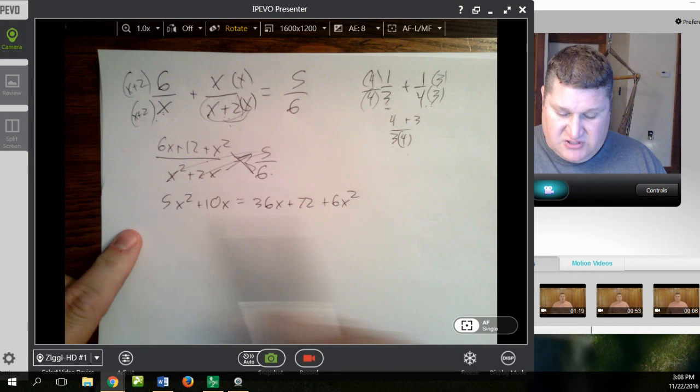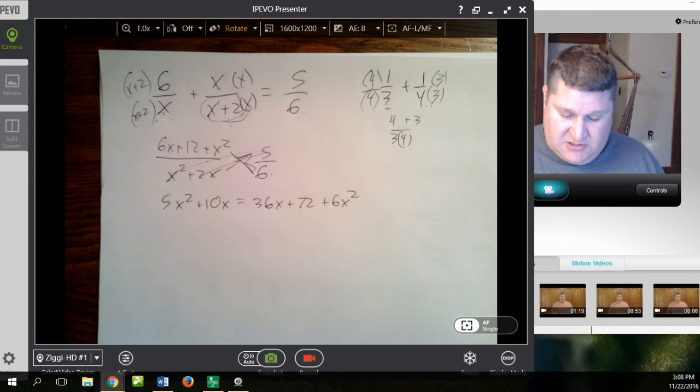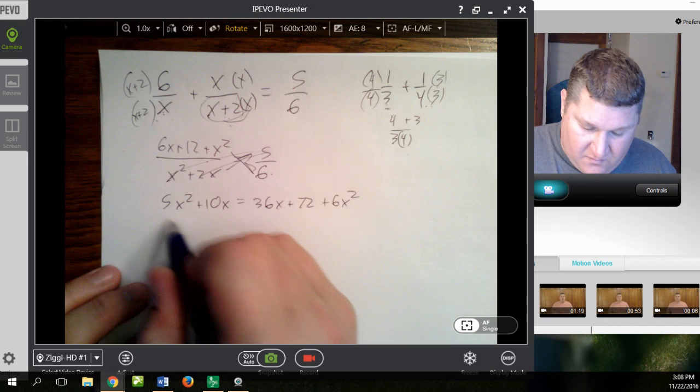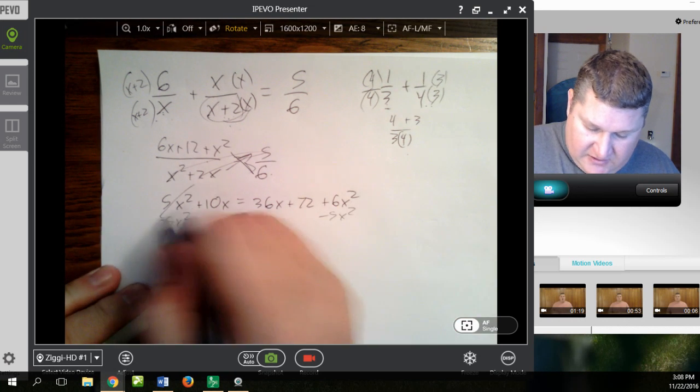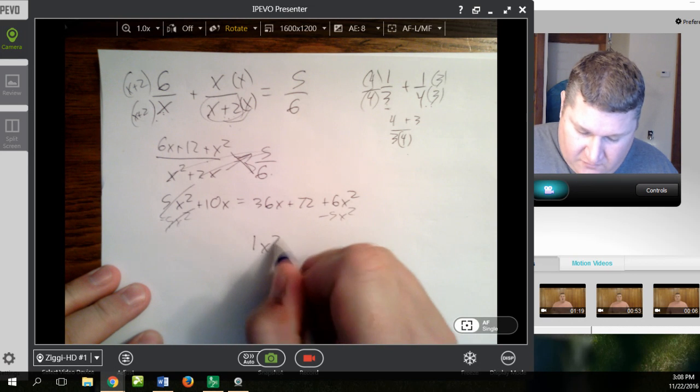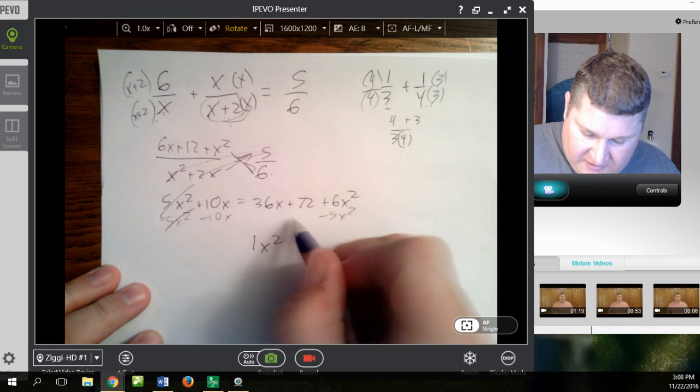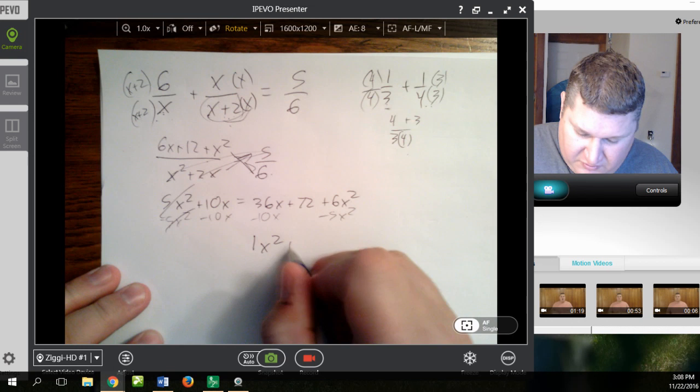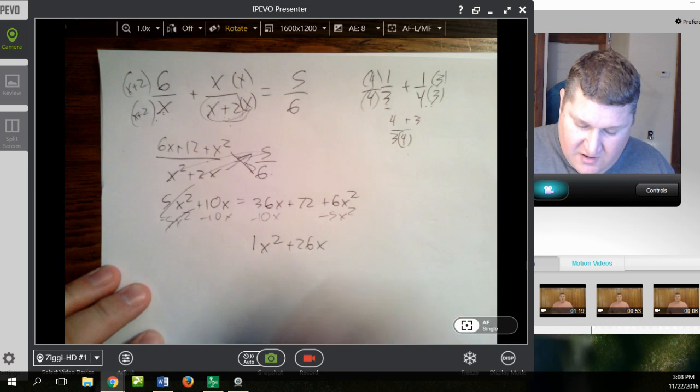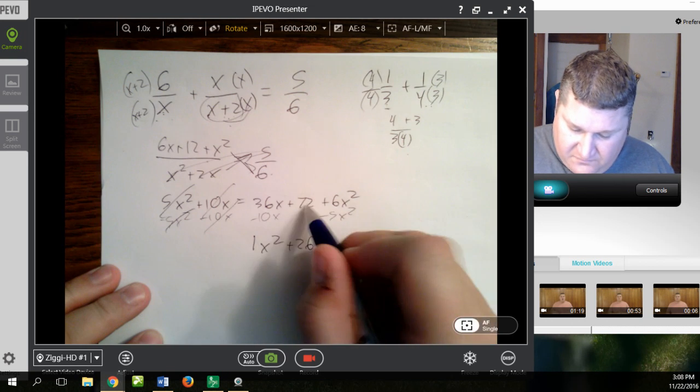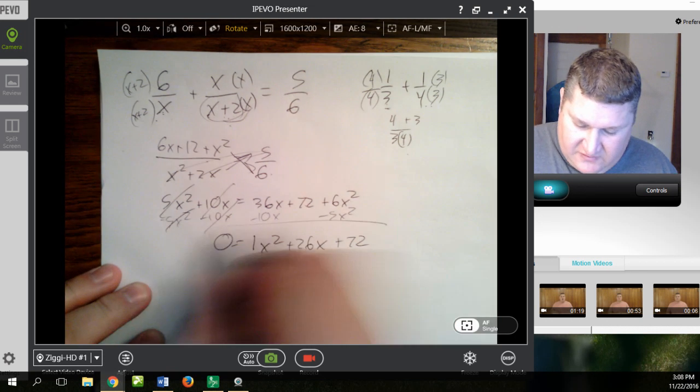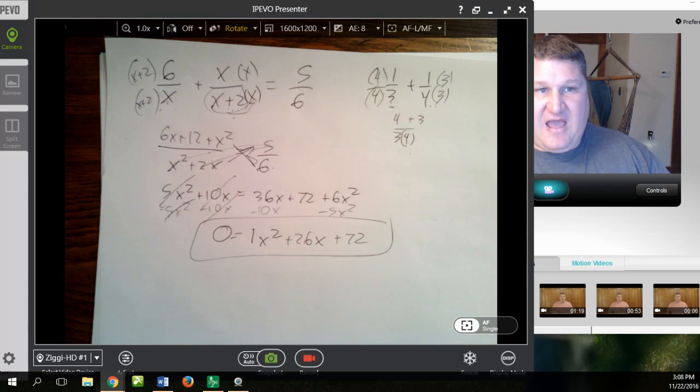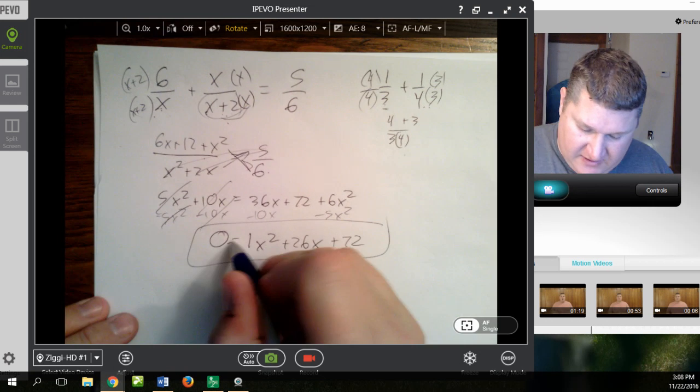Now, weirdly, you have a bunch of x squareds and x's. So, you need to get everything together. So, minus 5x squared, minus 5x squared leaves 1x squared, minus 10x, minus 10x, leaves plus 26x, and then 72. Now, at this point, what do we have to do? Factor. We're going to have to factor.